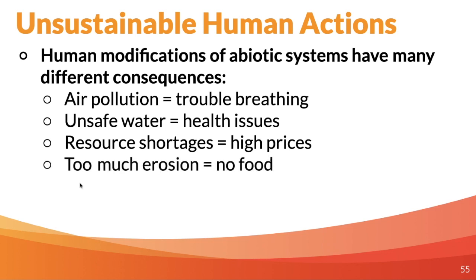Too much erosion in the ground is going to cause agriculture issues. In India, for example, there's a huge issue with overgrazing of cattle in some areas, causing erosion and desertification in the ground to the point where you can't grow anything there and agriculture is depleted. If agriculture continues to be depleted and areas are going through major droughts and desertification, we're going to have less food to go around and prices are going to go up — all kinds of issues might stem from that.